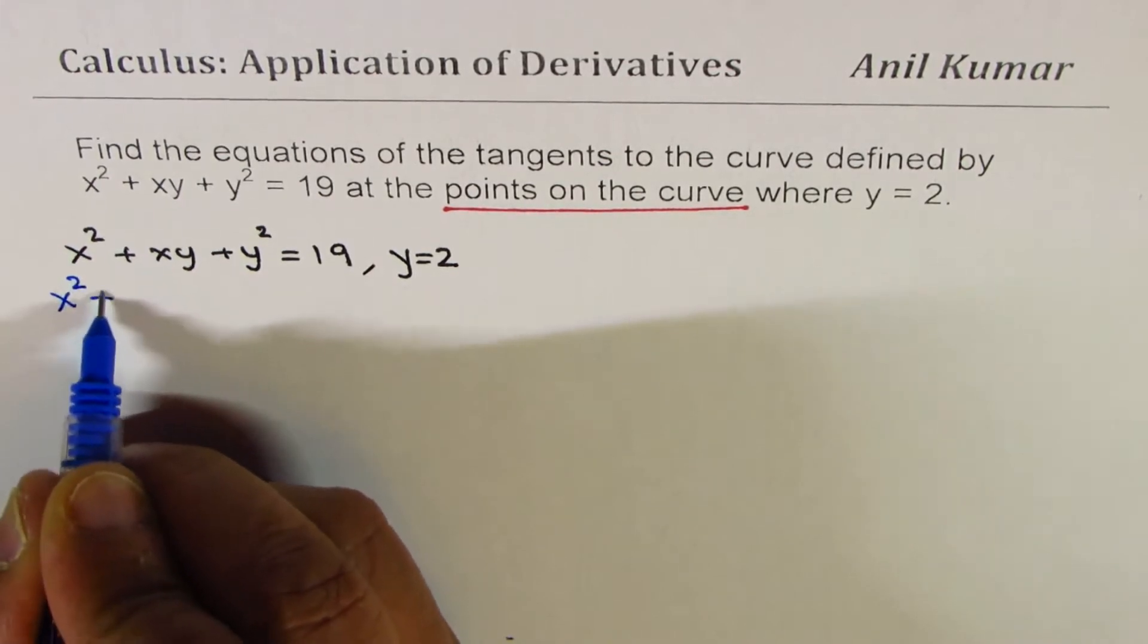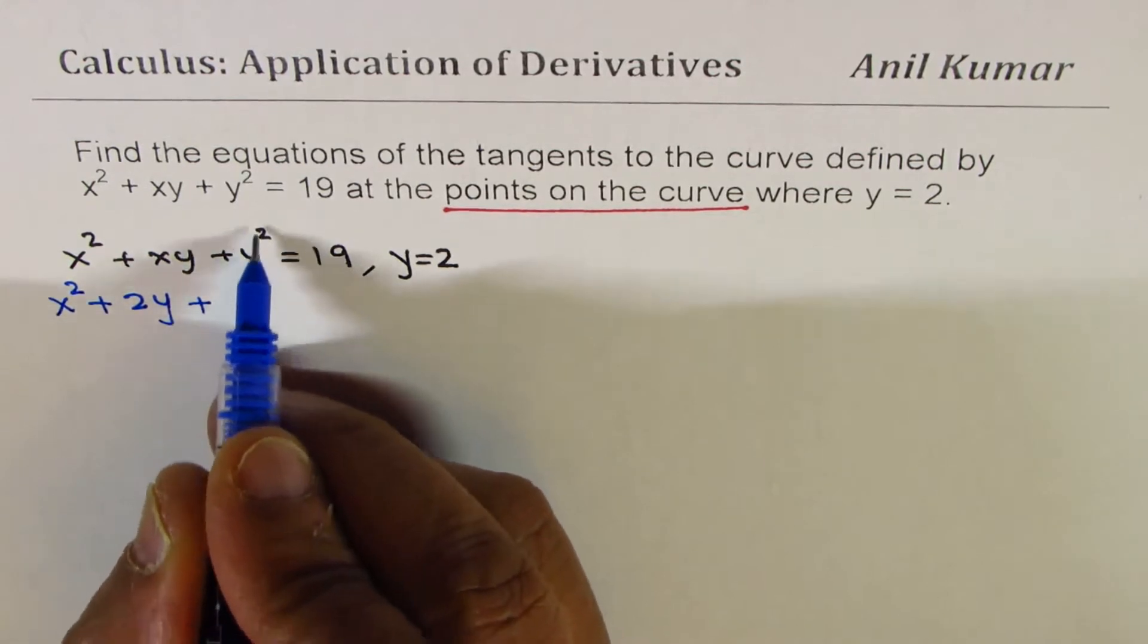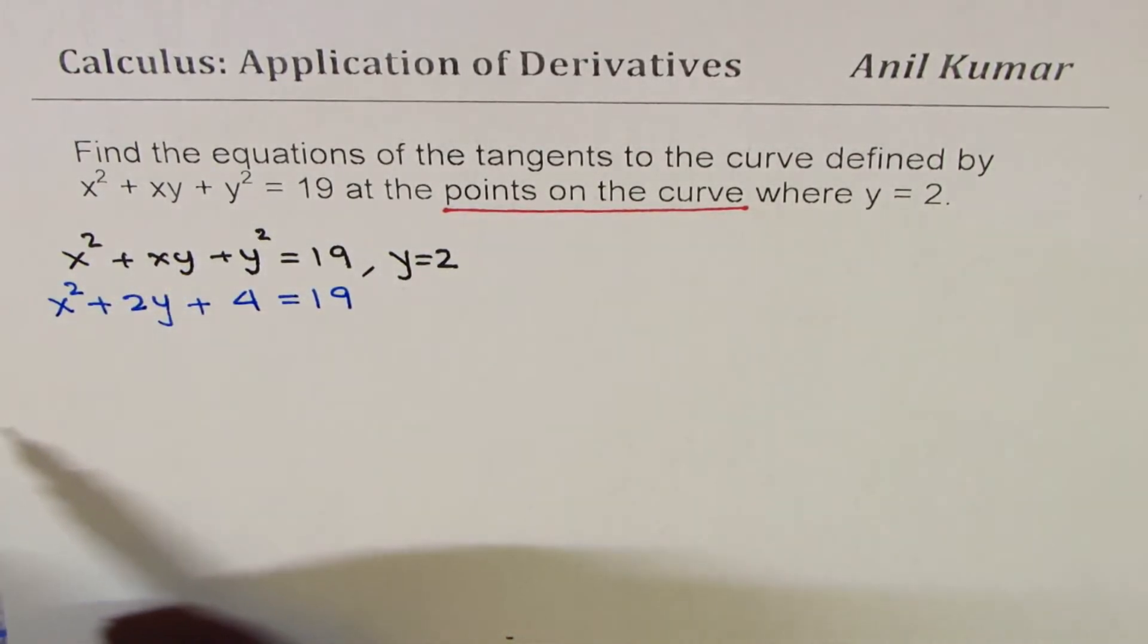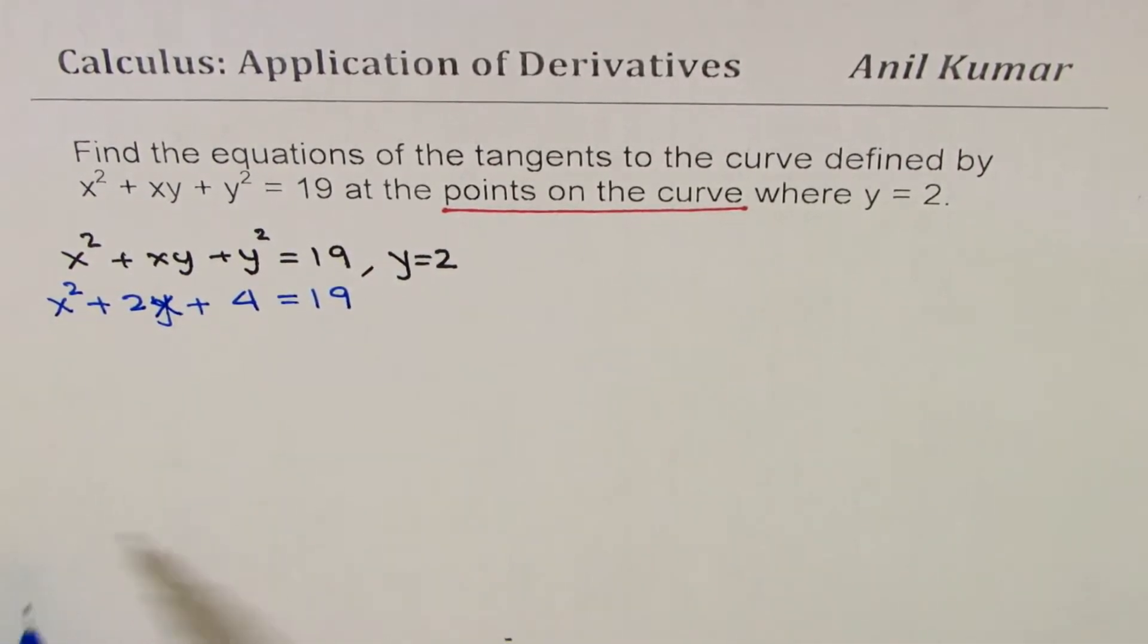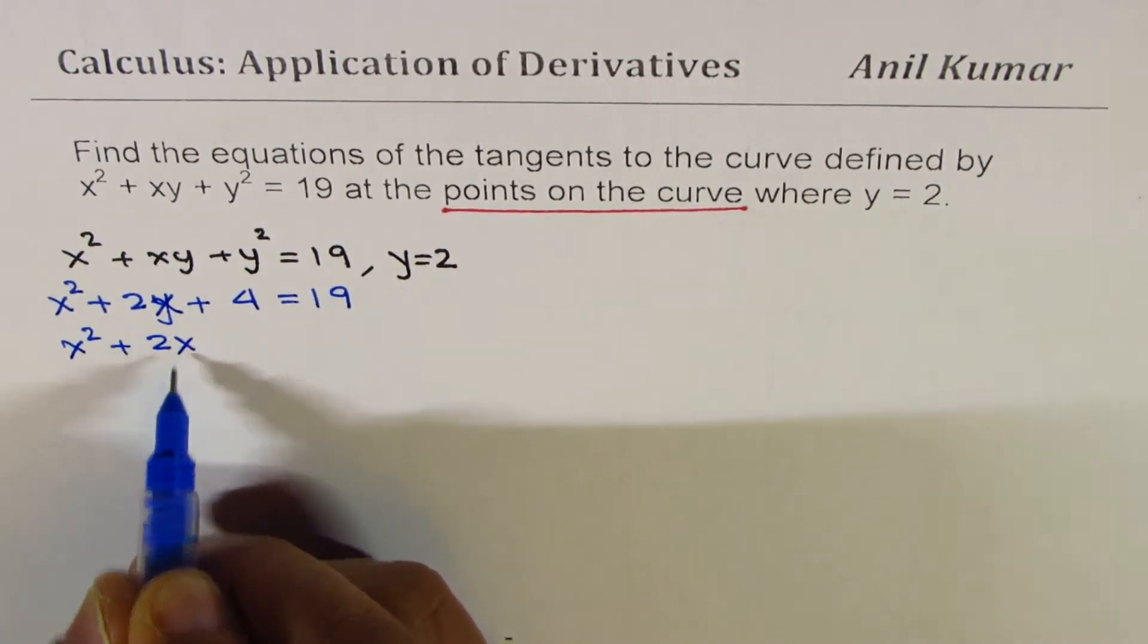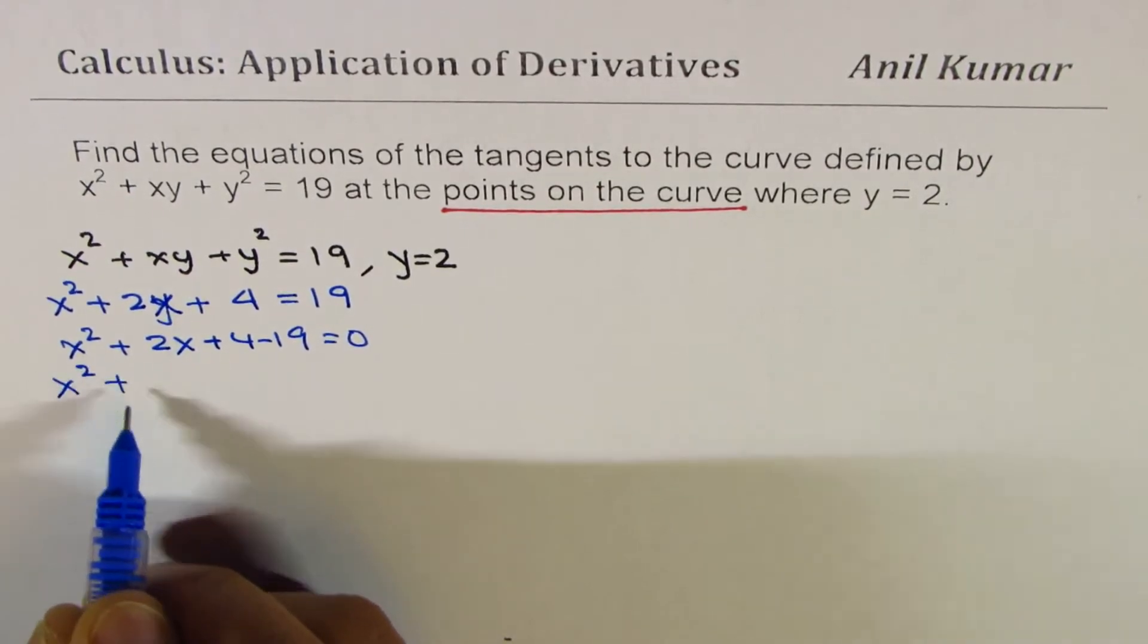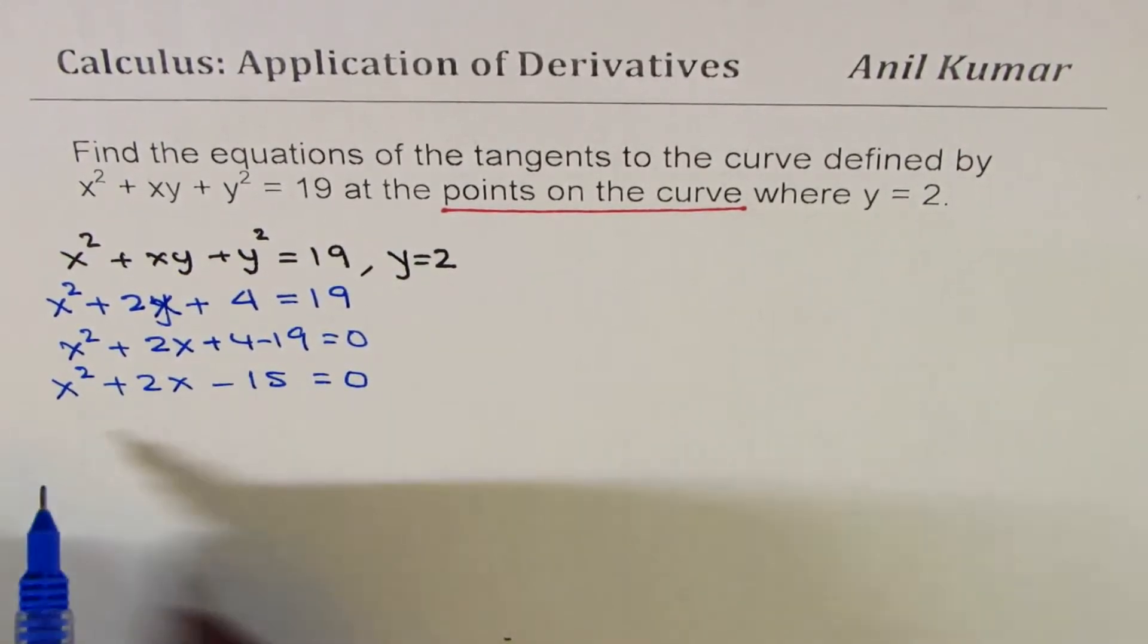So, we get x² plus y is 2. So, we get 2x plus 2², which is 4, equals to 19. So, we substituted y = 2 in our equation. I mean, 2x. So, we substitute 2 for y. So, we could write this as x² + 2x, bringing 19 this side. We get plus 4 - 19 = 0, or x² + 2x - 15 = 0.